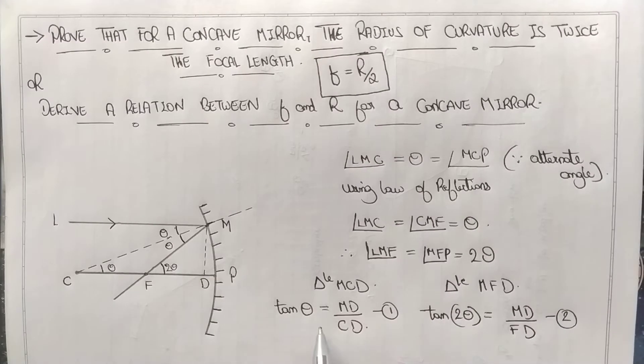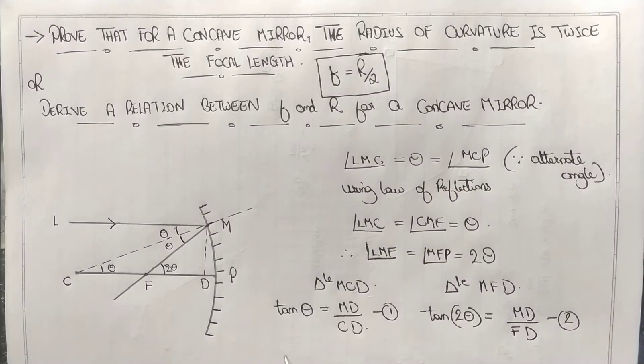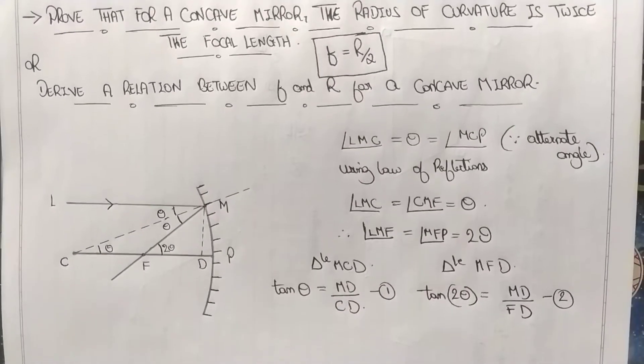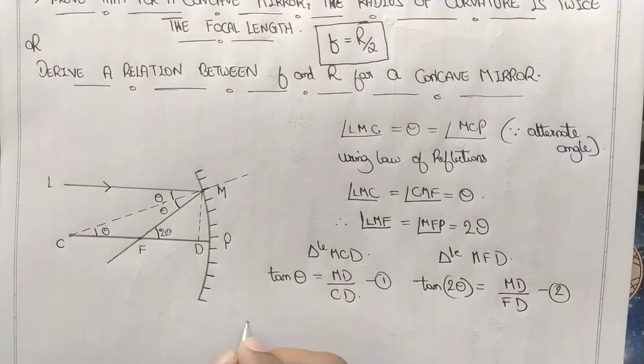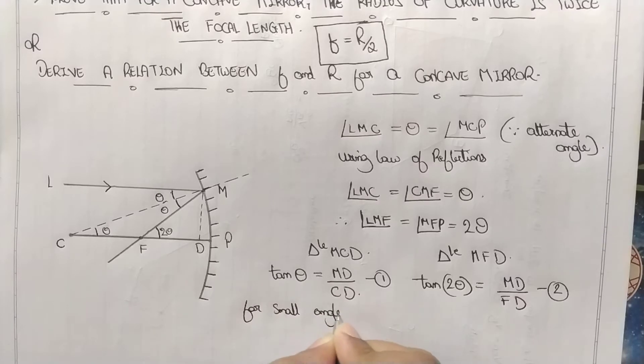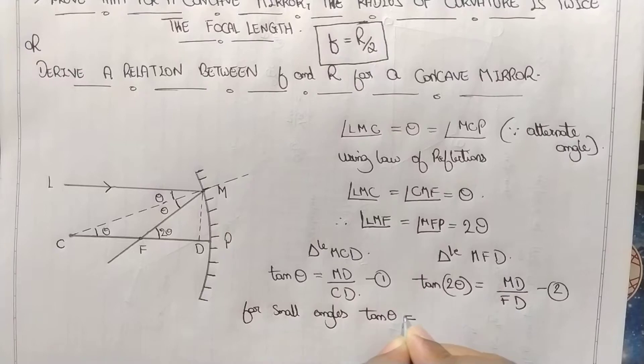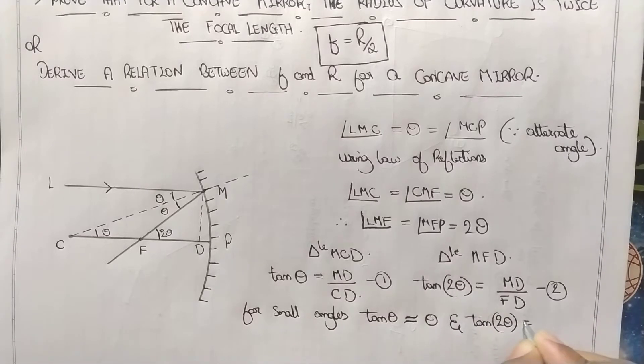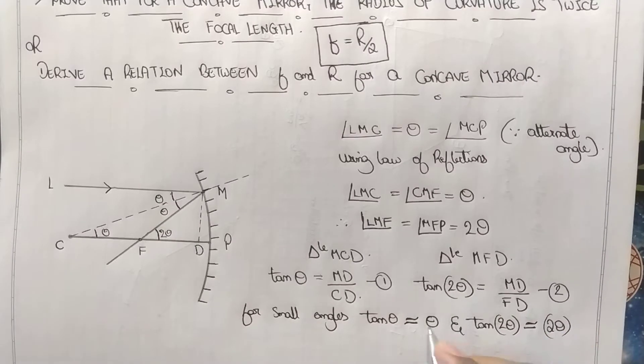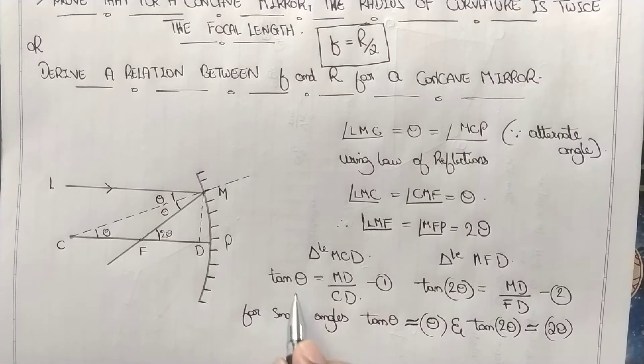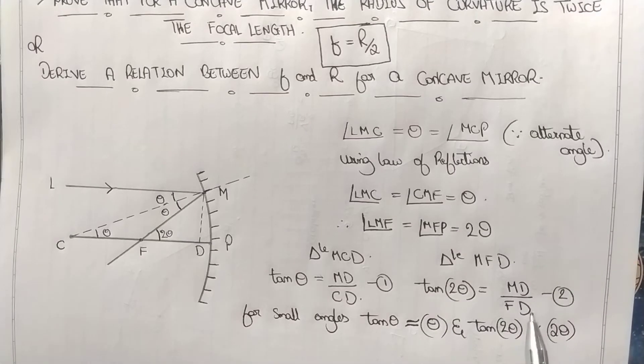Now divide equation 2 by equation 1: tan 2 theta divided by tan theta. There will be an approximation done here. For small angles, tan theta can be written approximately as theta, and tan 2 theta as approximately 2 theta. From this we have theta equals MD by CD, and 2 theta equals MD by FD.